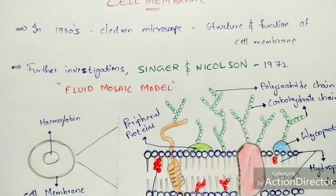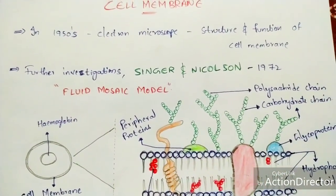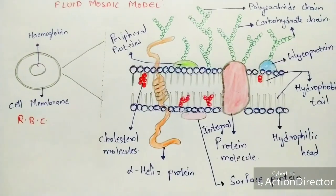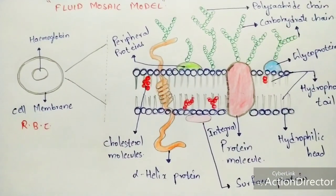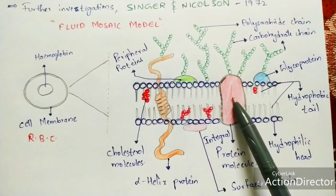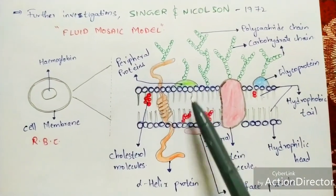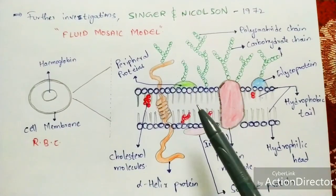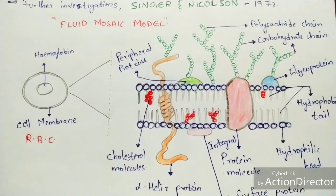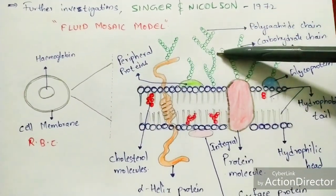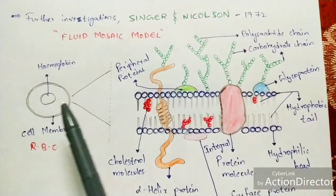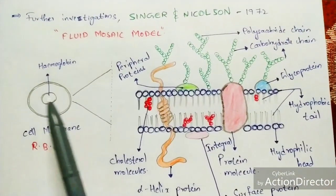Singer and Nicholson named the cell membrane the fluid mosaic model. The reason for this name: in the cell membrane diagram, between the two lipid layers there is a presence of a quasi fluid — a lipid fluid present between the two lipid layers. This fluid plays a major role in the transport of proteins from the outside region to the inside region of the cell.